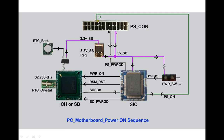From the 14th pin of the power supply connector, which is the green wire, 5 volts is given to the SiO chip. Before pressing the power button, the voltage at this point will be 5 volts. This pin is called PS_ON (Power Supply On).